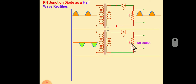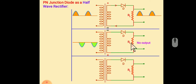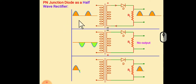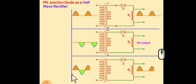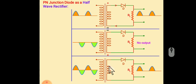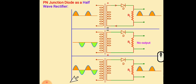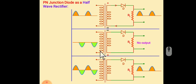So if we add these two inputs, we will get a sinusoidal wave which is the alternating current — that means the source.